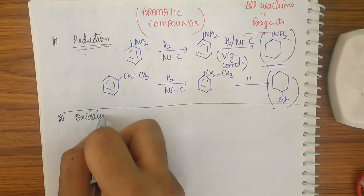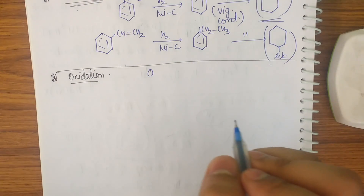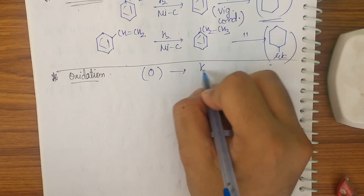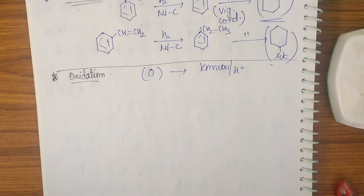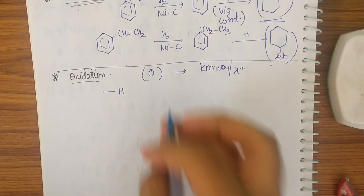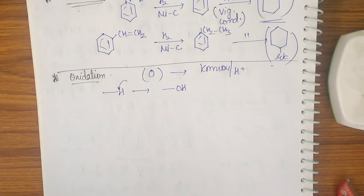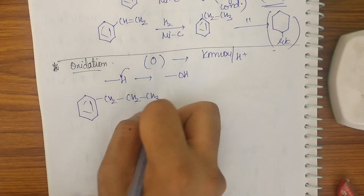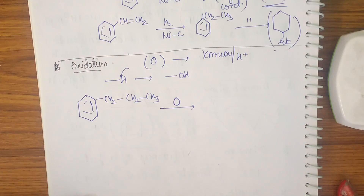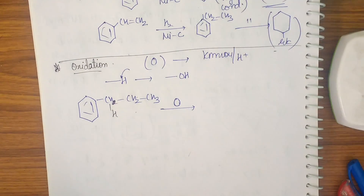The standard notation for oxidation is written as [O], which basically means KMnO₄/H⁺ — a very strong oxidizing agent. Oxidation means adding oxygen: H can be oxidized to OH. For example, if I have benzene-CH₂CH₂CH₃ and oxidize it with KMnO₄/H⁺, I need to think about which hydrogen should be oxidized.